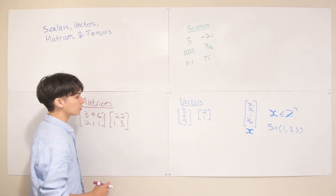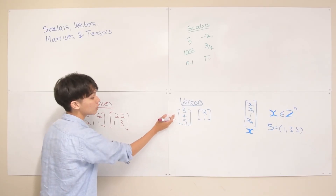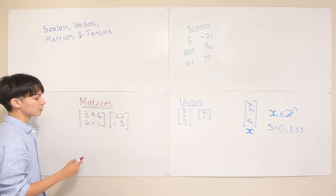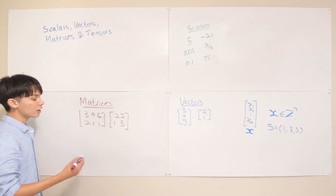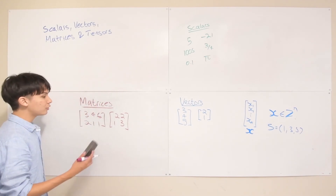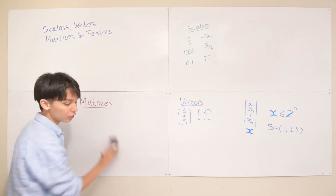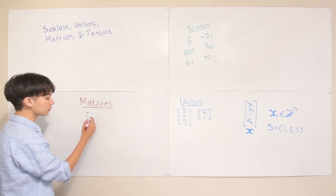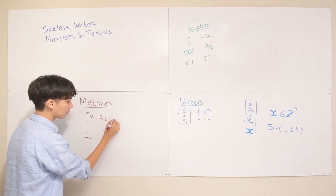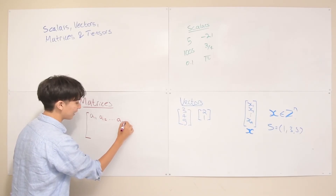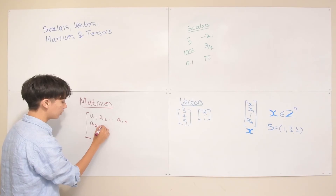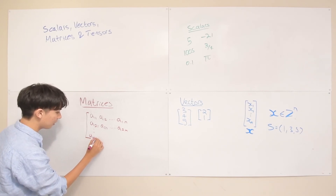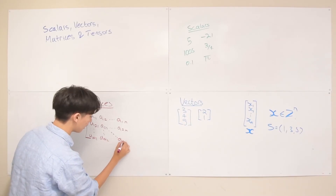In general, if you want to state some variable matrix, with vectors and scalars we used lowercase letters, but with matrices we use an uppercase letter — the default is A. To represent a general m×n variable matrix, where m is the number of rows and n is the number of columns, the elements are written as A₁₁, A₁₂, up to A₁ₙ in the first row, then A₂₁, A₂₂, up to A₂ₙ, down to Aₘ₁, Aₘ₂, up to Aₘₙ.